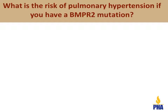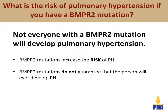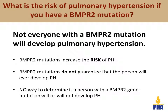What is the risk of pulmonary hypertension if you have a BMPR2 mutation? Not everyone with a BMPR2 mutation will develop pulmonary hypertension. BMPR2 mutations increase the risk of pulmonary hypertension but do not guarantee that a person will ever develop it. However, we don't yet know which person with the mutation will go on to develop pulmonary hypertension or at what age it will develop.